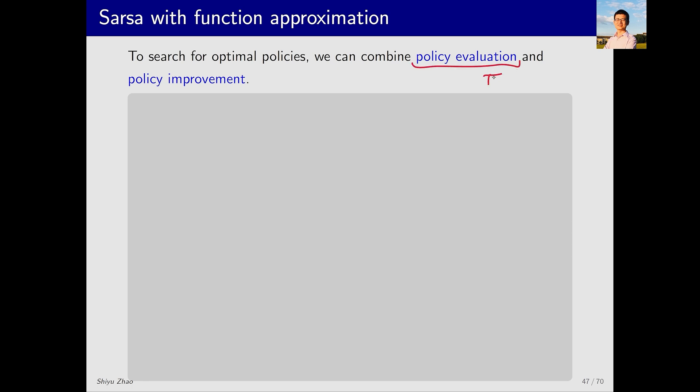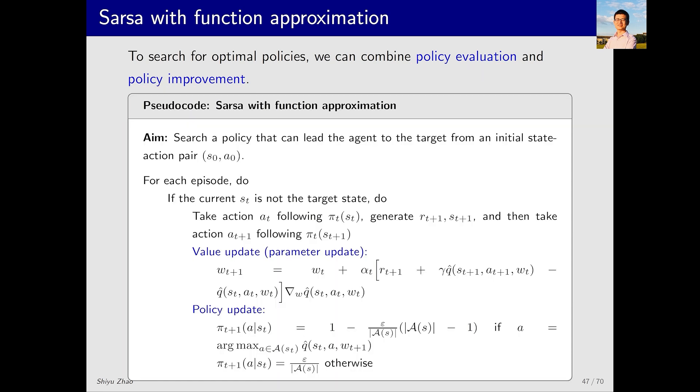That is, given a policy pi, it can estimate the action value. Now we can combine it with policy improvement so that we can search for the optimal policy. Here is the pseudocode. Let's take a look. For each episode we do the following: if the current state S_t is not the target state, we proceed as follows. The task here is about starting from one state and finding a good path to the target state. The first step is to generate data. When I'm in state S_t, I need to follow the policy and then take action A_t, then interact with the environment to obtain R_t+1 and S_t+1. After that, in state S_t+1, I check what action I would take based on the policy there.